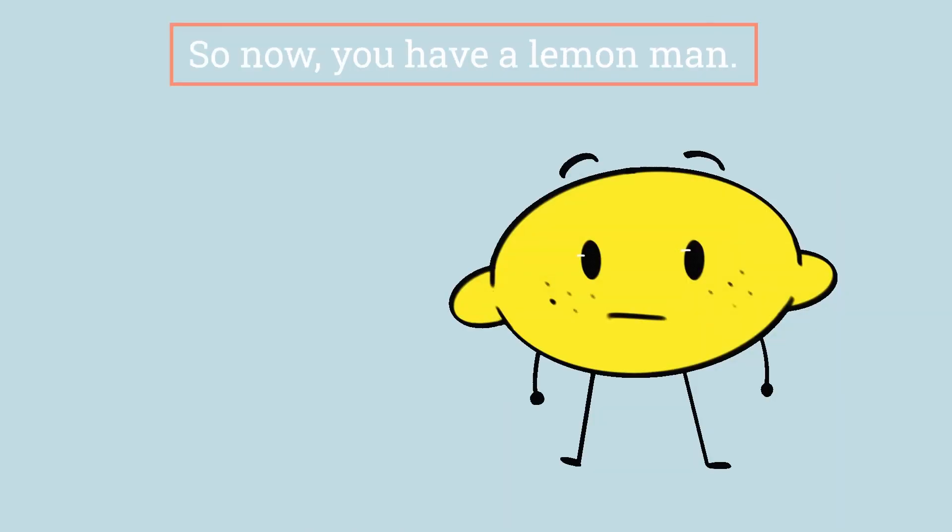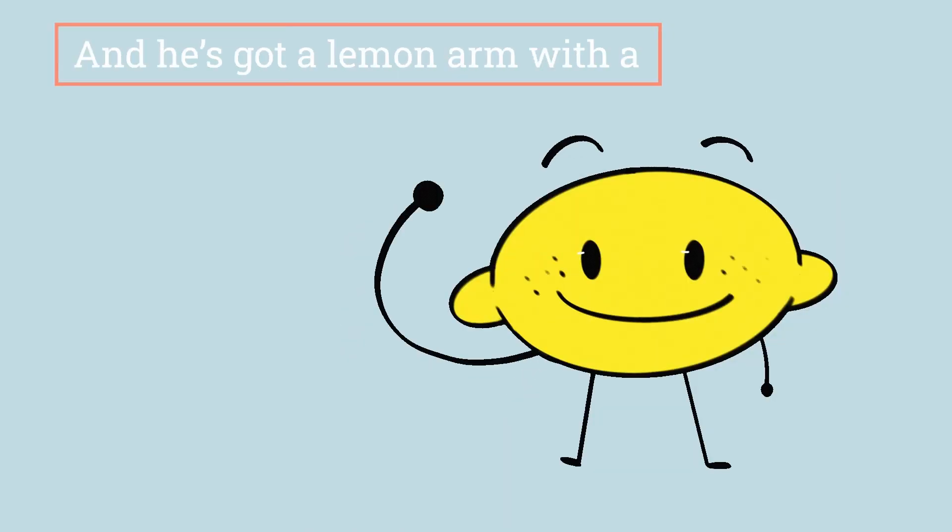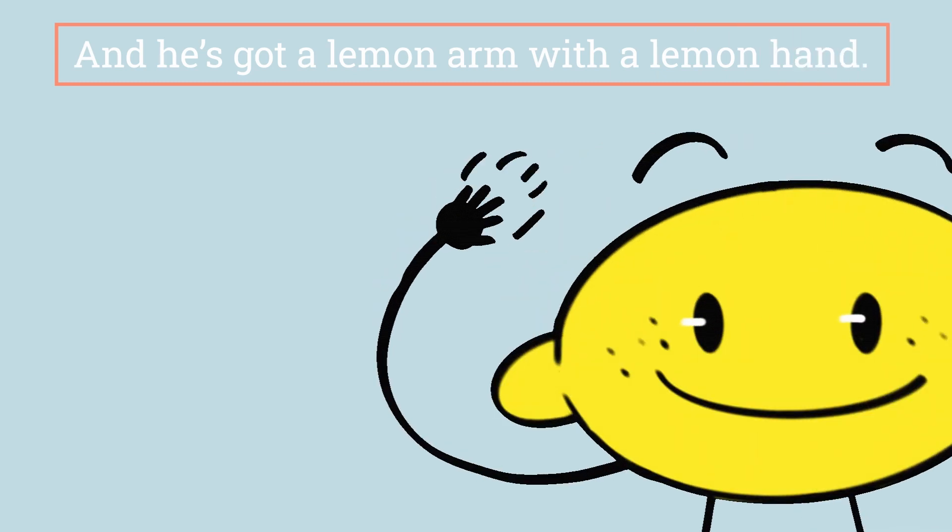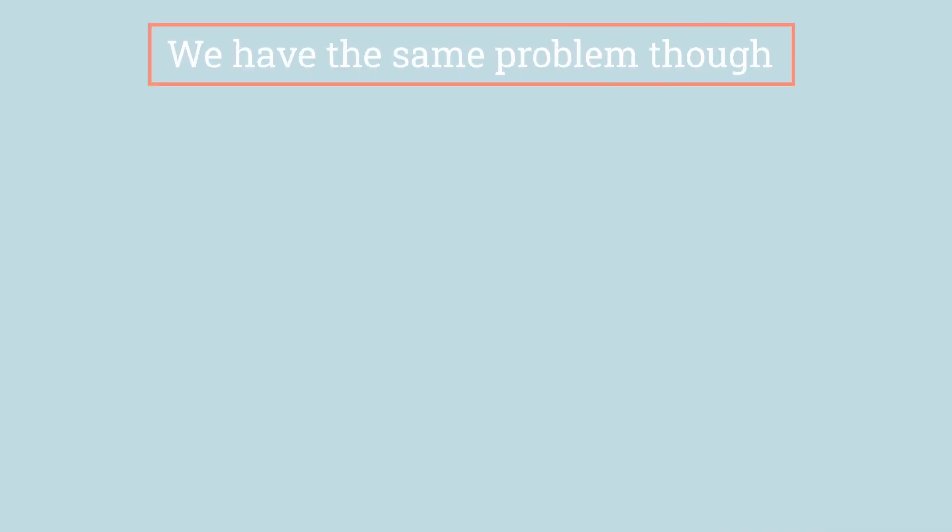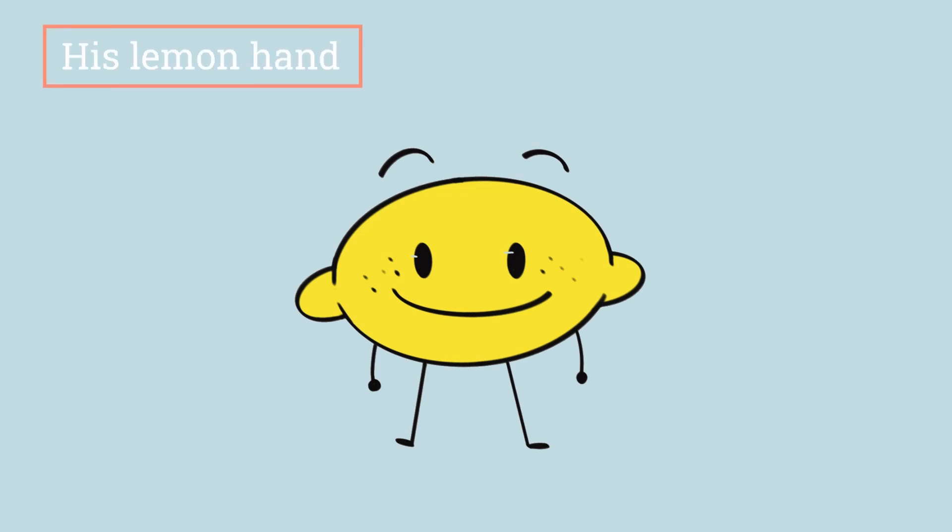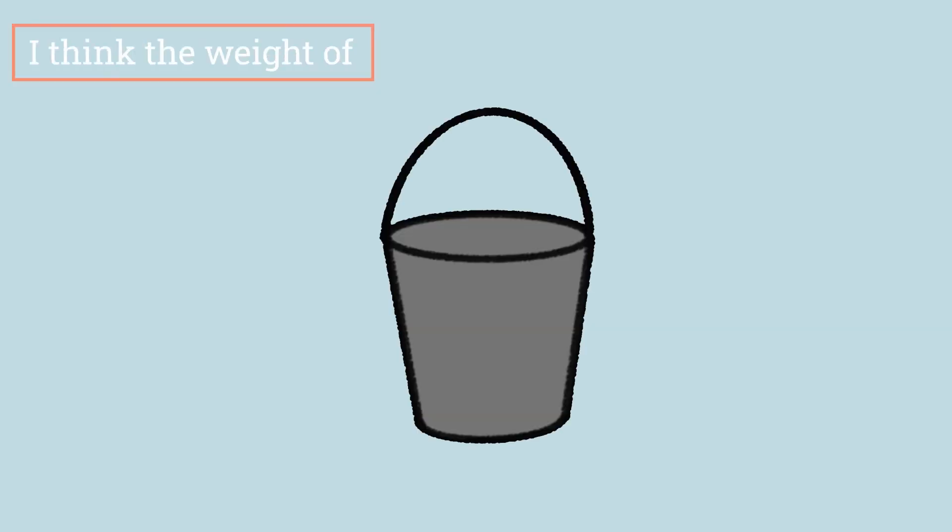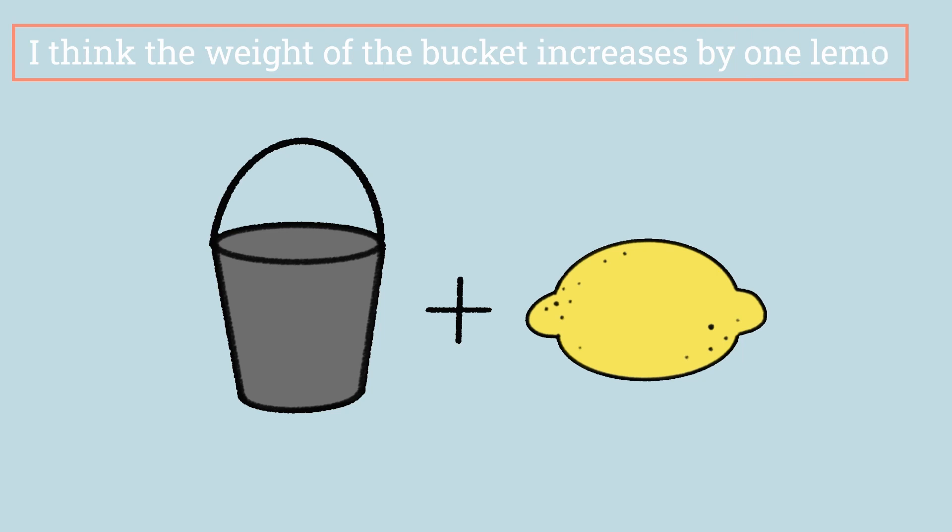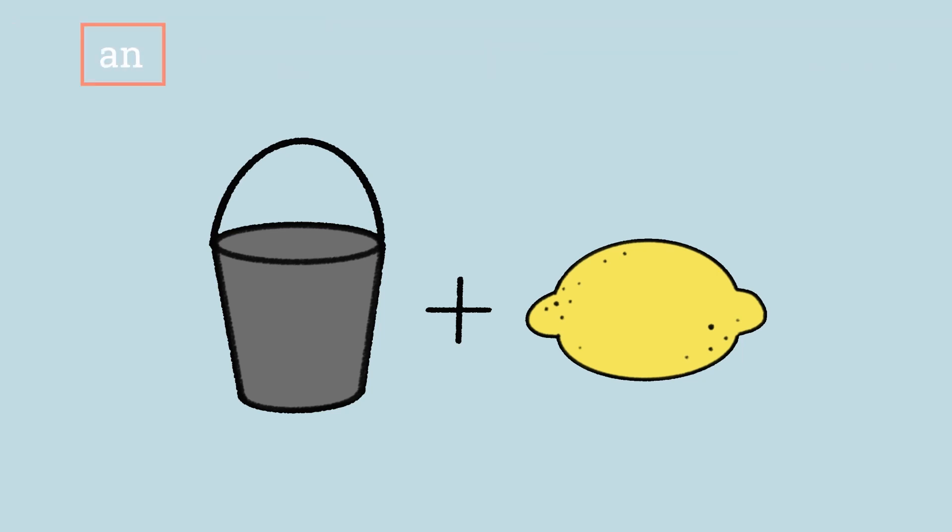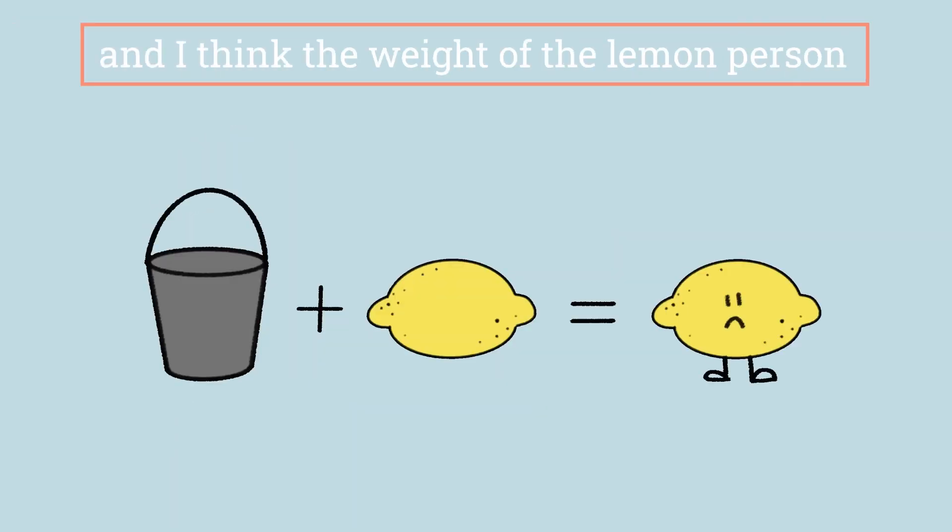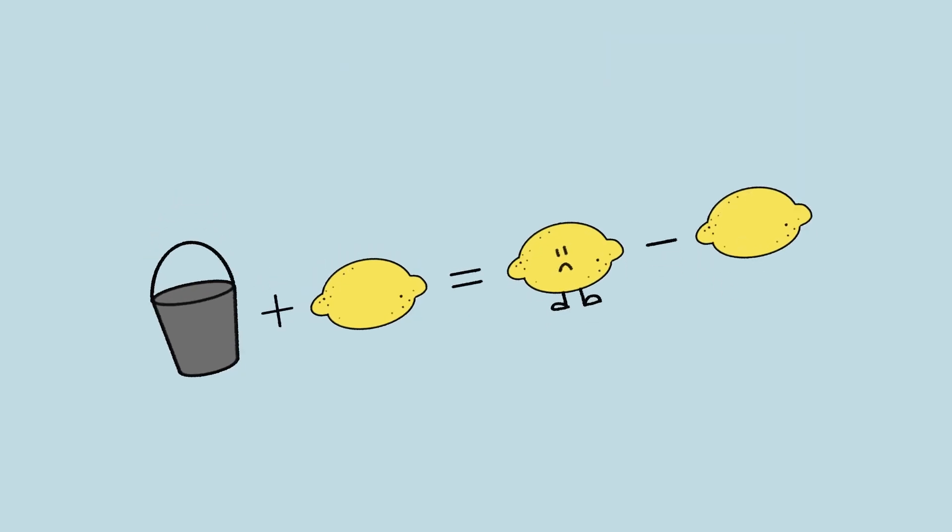Yes. So now, you have a lemon man, and he's got a lemon arm with a lemon hand. We have the same problem, though. As long as the lemon hand is connected to his lemon arm, I'm not sure. It's only because the lemon is cut off from his lemon body— But is it? I think the weight of the bucket increases by one lemon, and I think the weight of the lemon person has to decrease by one lemon, right?